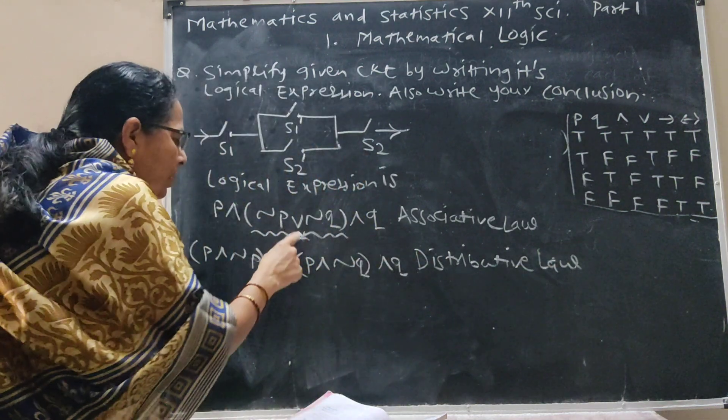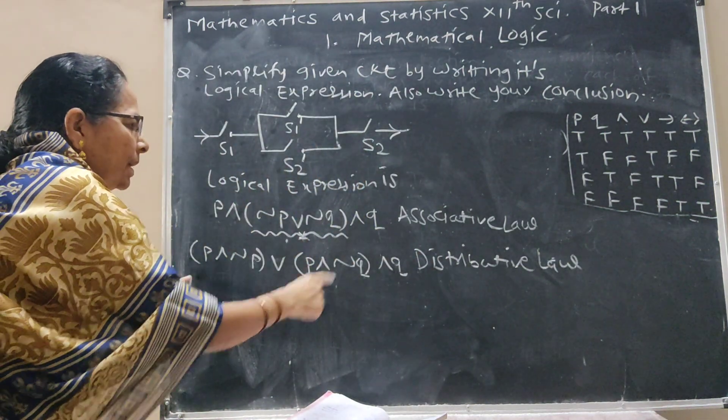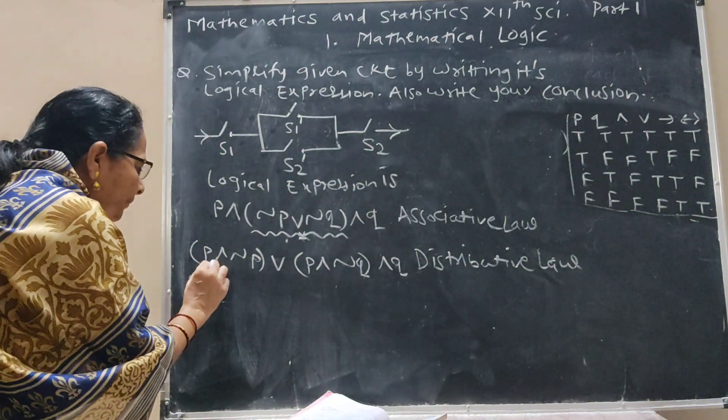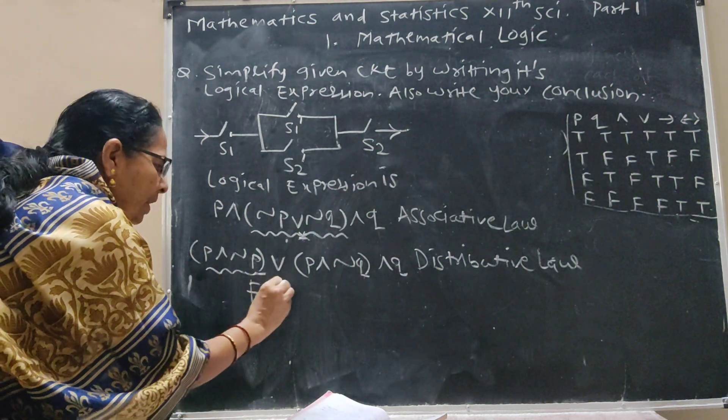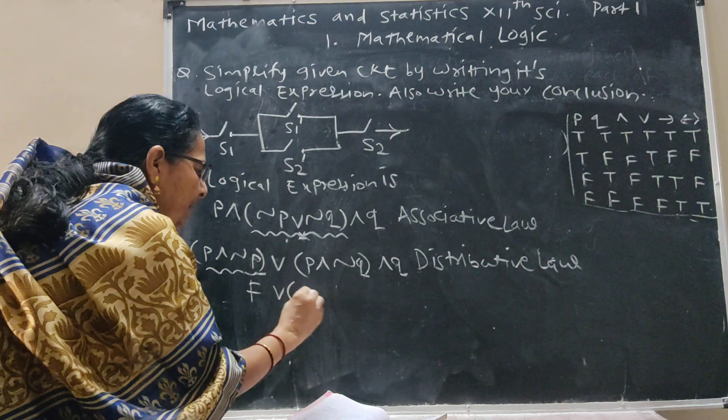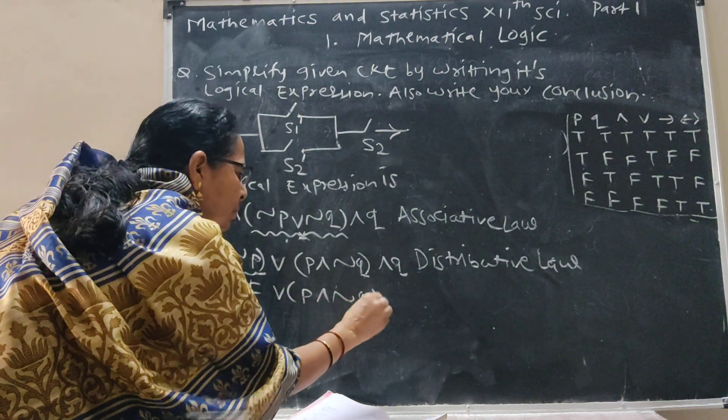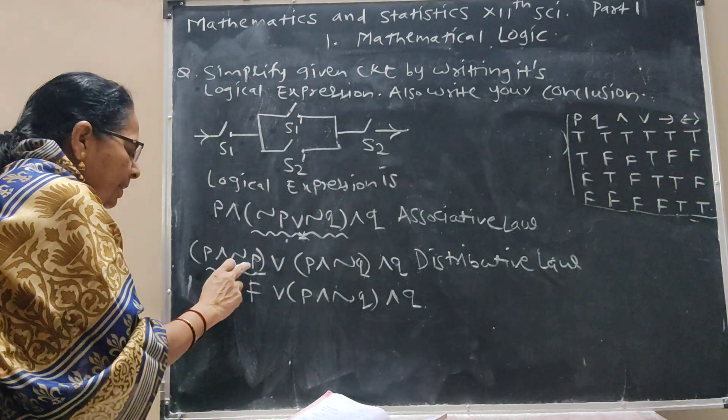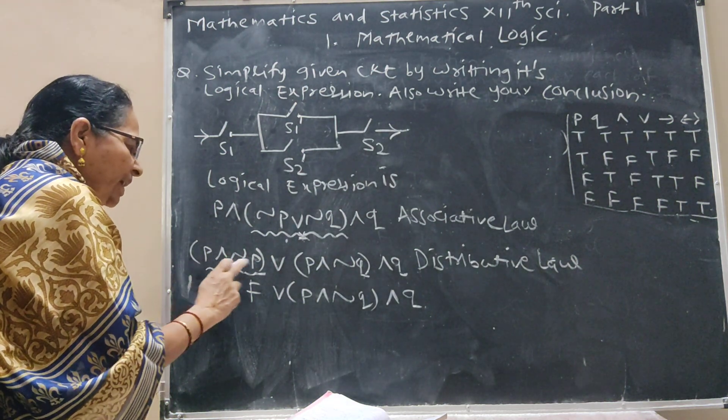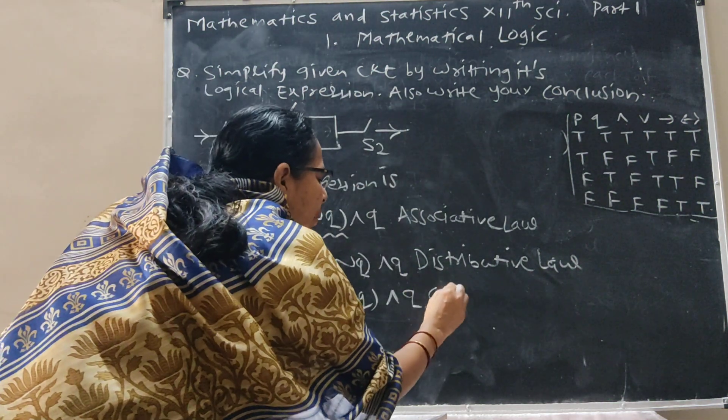We apply R common through brackets. Now this value P and negation P is F, or this is P and negation Q and Q. Now this is complement law. P and negation P is F.